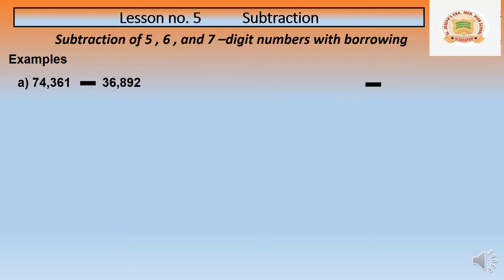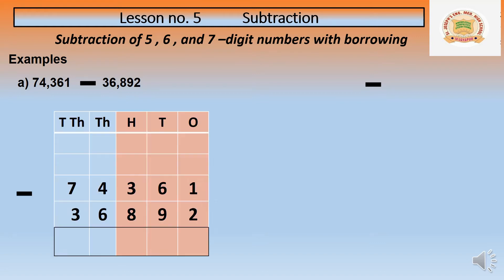We have arranged the numbers in a chart. As I told, subtraction should begin from the ones place, then move to tens, hundreds, thousands, ten-thousands. Now observe the ones place digits — we are having 1 and 2. In the ones place, 1 minus 2 is not possible because 1 is smaller than 2.